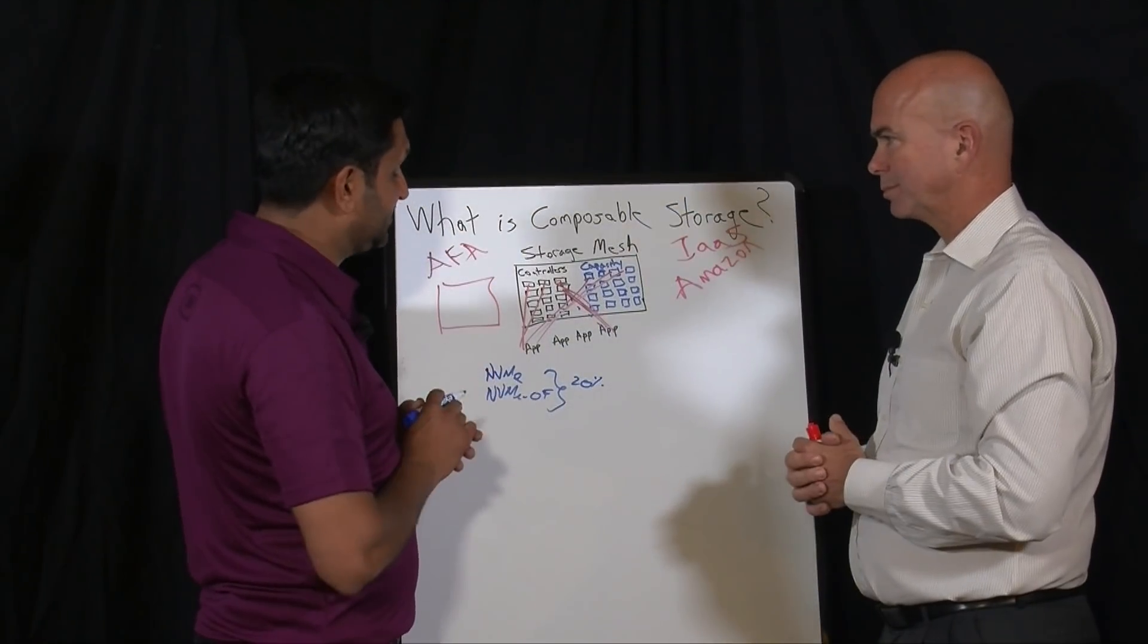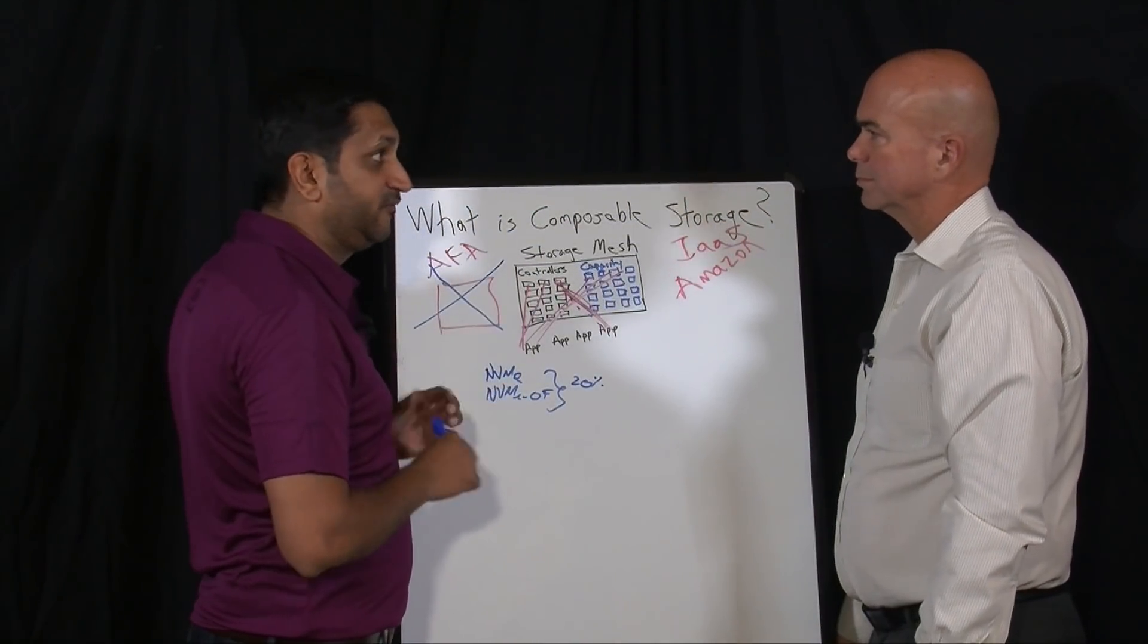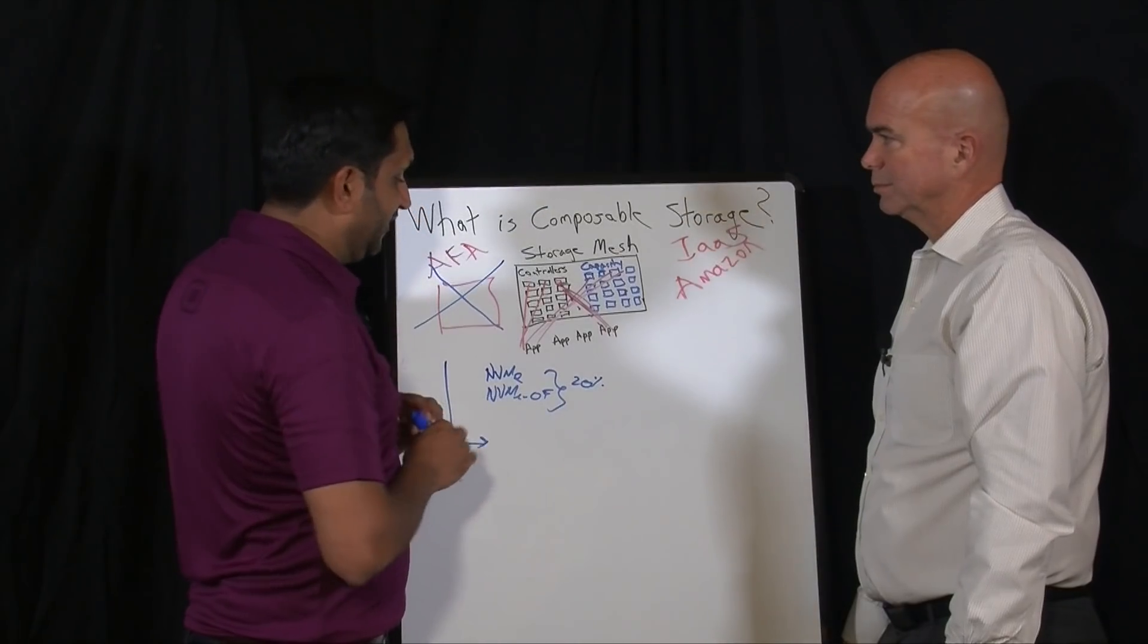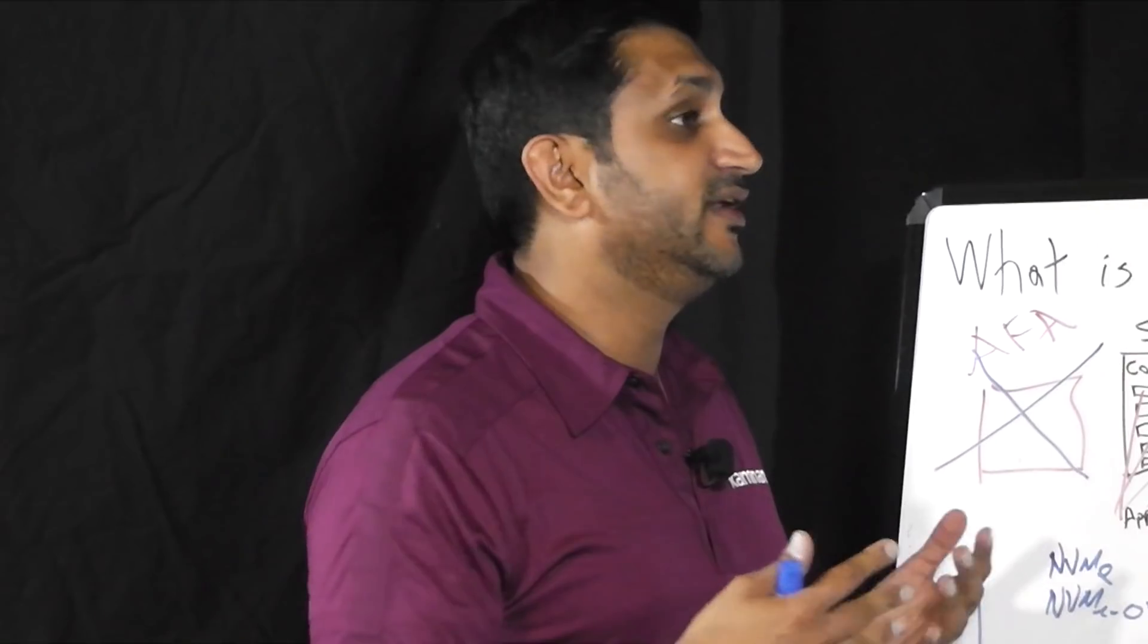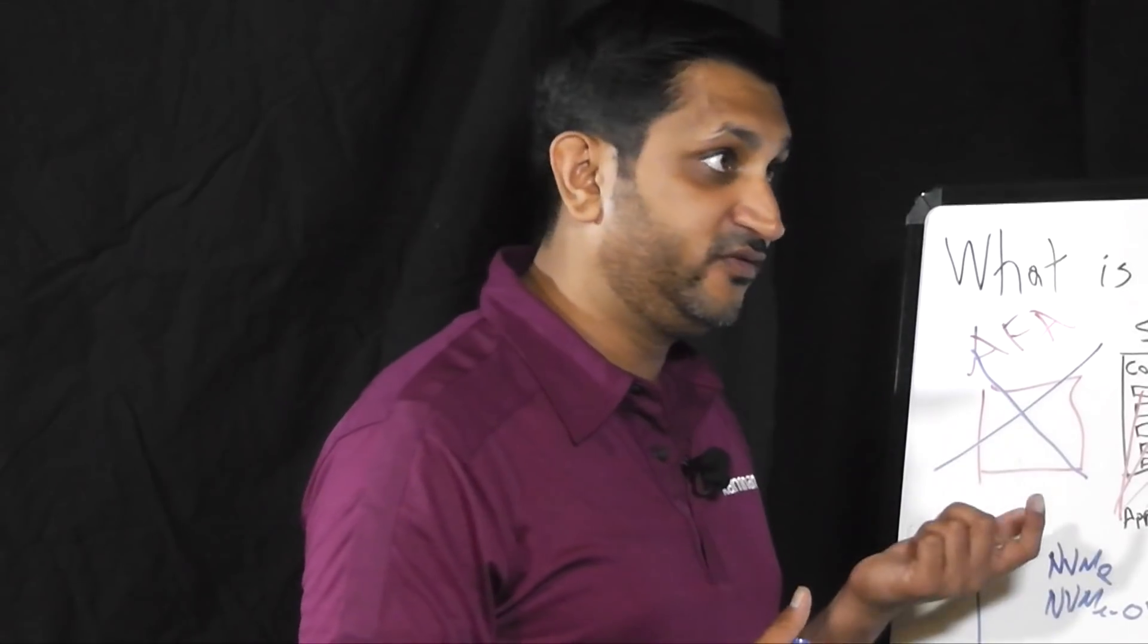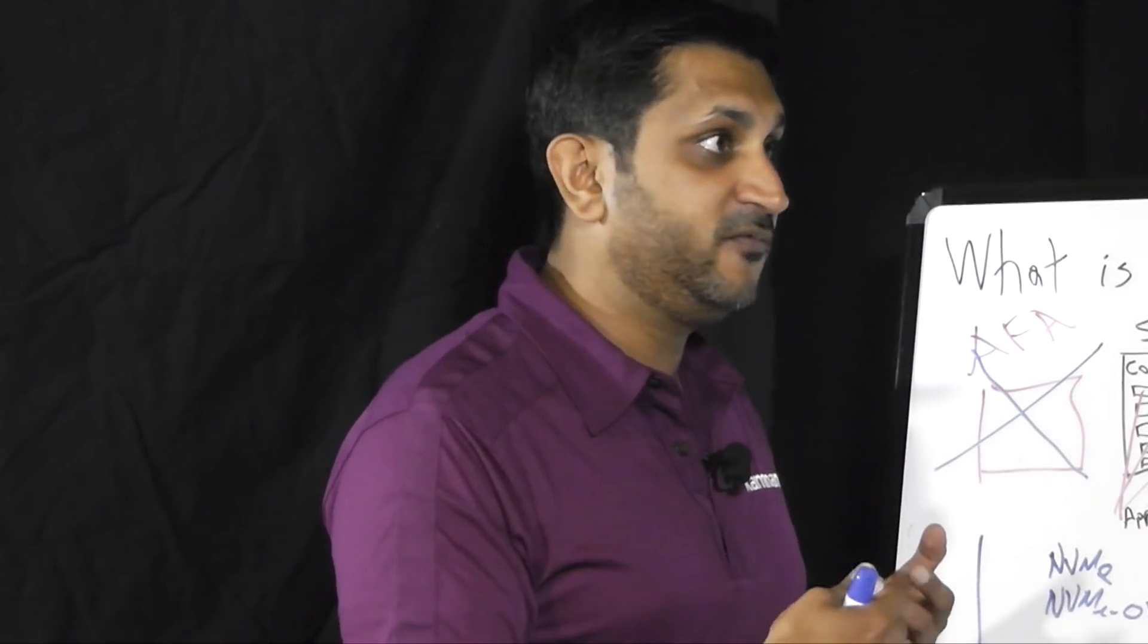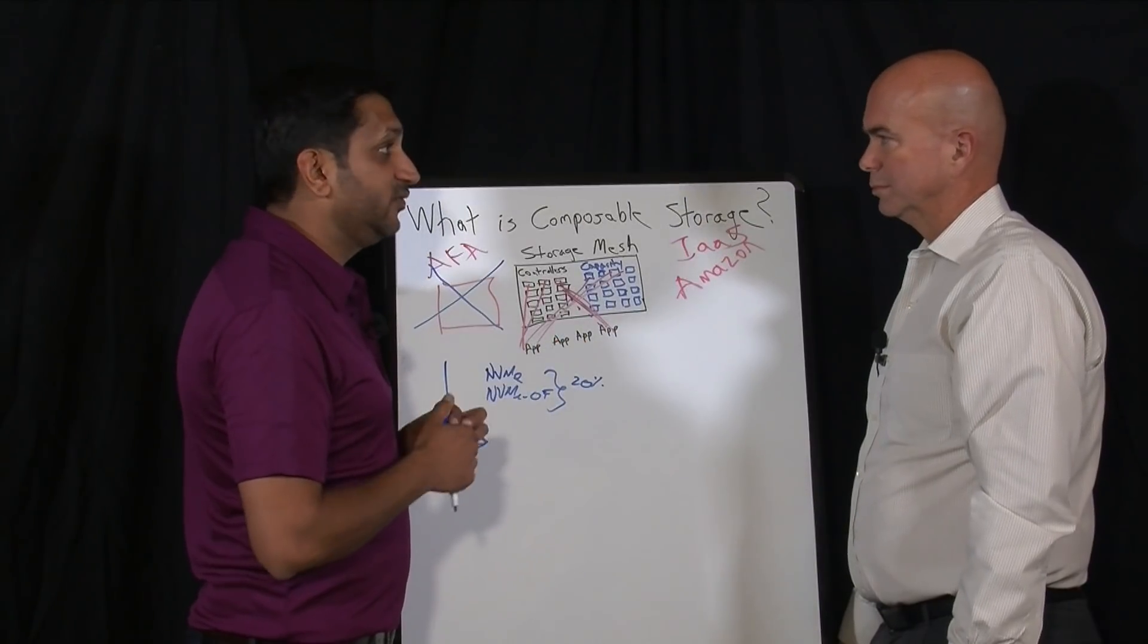We think somewhat dramatically that the storage array as it exists today will fail to exist in the next five years. We think the storage array, all flash arrays, will essentially be a collection of resources or an NVMe mesh. A cluster of NVMe fabric that has compute resources, controllers, has memory, has capacity resources.